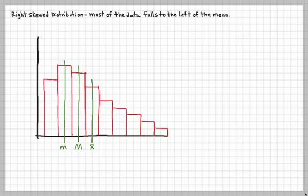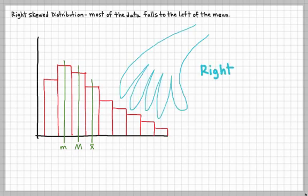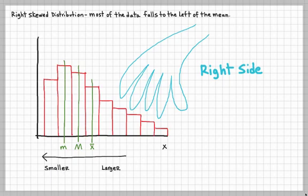Sometimes, if somebody gives you a picture and asks if it's right or left skewed, just think of your hand squishing the right side. If your hand is squishing the right side of the graph, it's right skewed. But that's very non-mathematical. The true way of determining if it's right skewed is to understand that on the X axis, values are larger to the right and smaller to the left, and that mode is less than the median, which is less than the sample mean.